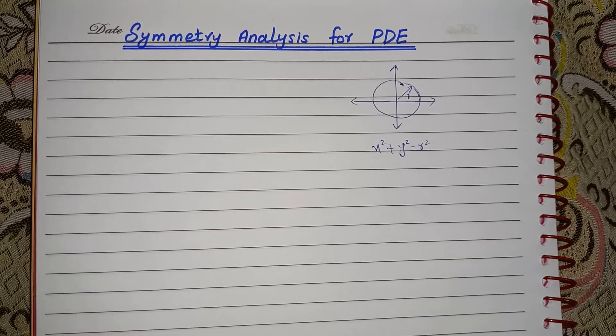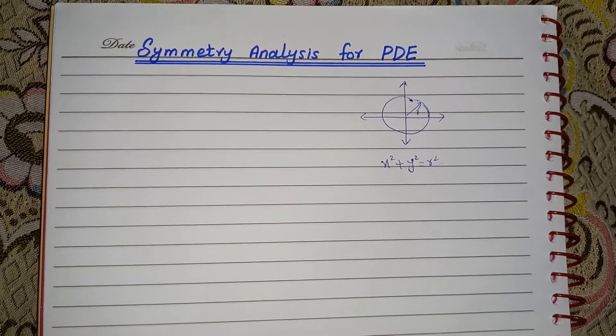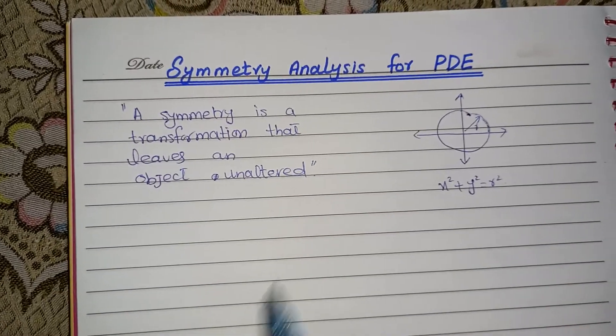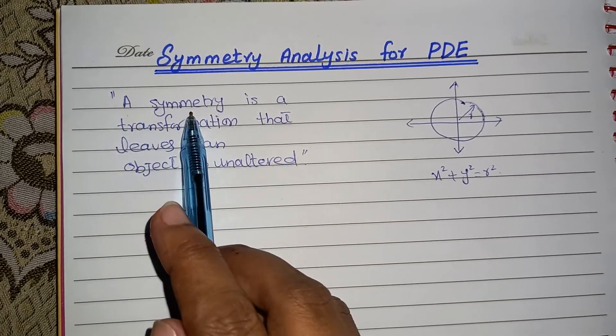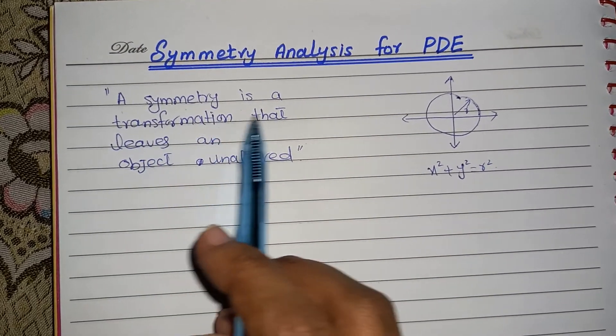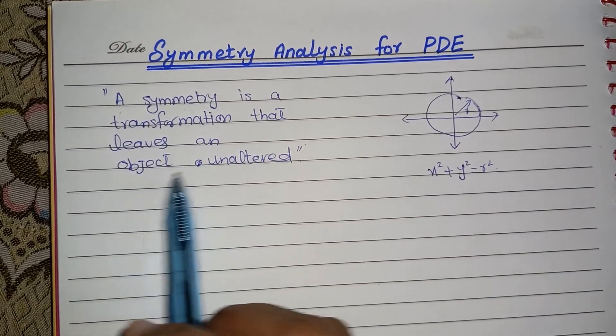But what is the definition of a symmetry? Then let me write it down. Students, its definition says that a symmetry is a transformation that leaves an object unaltered.